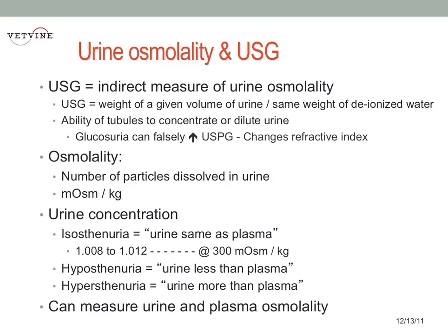A specific gravity — and therefore osmolality — less than plasma is hyposthenuria, ranging from 1.000 to around 1.007. Hypersthenuria is anything above that of plasma, so anything above a specific gravity of around 1.012 to 1.014.